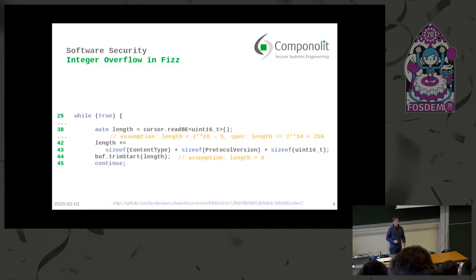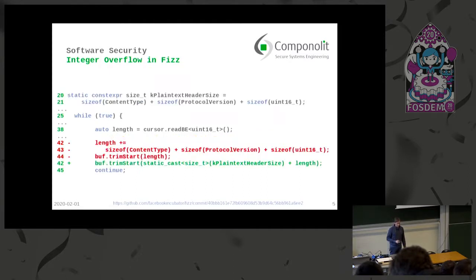The solution should be to check if the length is according to the standard. But Facebook's solution was to just use a bigger integer type. So now there is no integer overflow anymore, and it works fine even if the package is not standard-conformant.